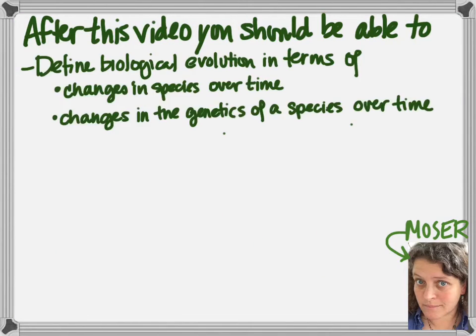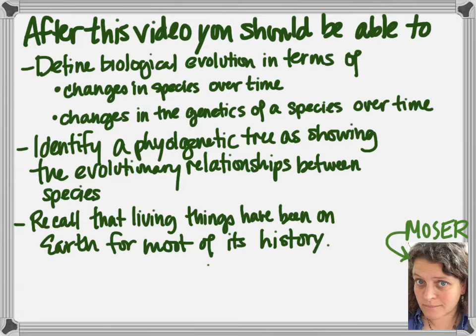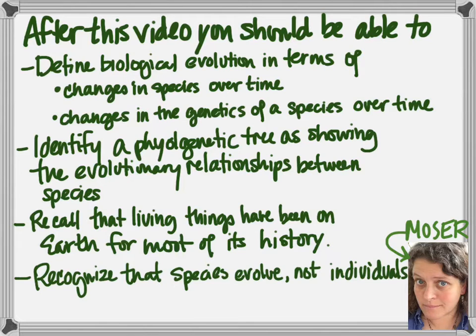After this video, you should be able to define biological evolution both in terms of changes that happen in a species over time, as well as changes in the genetics of a species over time. You should also be able to identify a phylogenetic tree as showing the evolutionary relationships between species. You should be able to recall that living things have been on Earth for most of its history, and recognize that species evolve. Individuals don't.